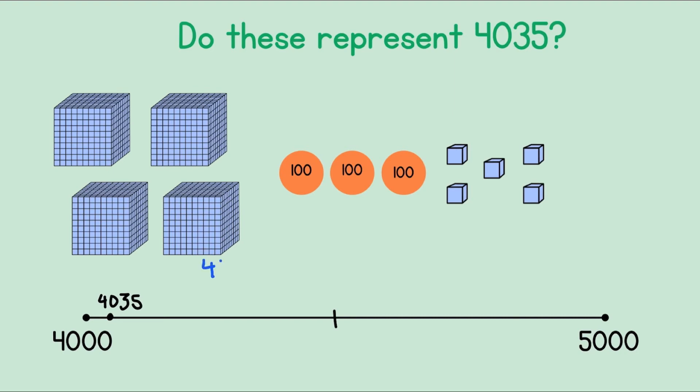What about the hundreds? 100, 200, 300. The ones blocks: 1, 2, 3, 4, 5. But check our number. It is 4,035. We have no hundreds, and over here we have hundreds. So this one is not correct.